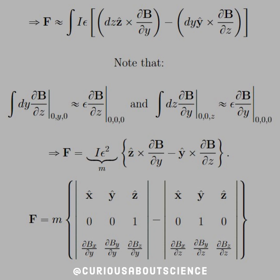Okay, so after that, we can now funnel those things through and substitute in. We see here that we end up with F equal Iε², which we kind of expected after the integration. We still have ẑ cross ∂B/∂y minus ŷ cross ∂B/∂z.